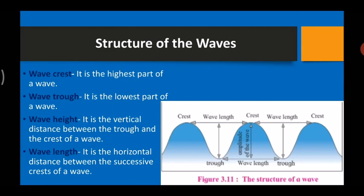Now let's look at the structure of waves. The sea water gets pushed up and down by the wind. The raised-up portion of a wave is called a crest — it is the highest part of a wave. The depressed portion is called a trough — it is the lowest part of a wave. Wave height is the vertical distance between the trough and the crest. Wavelength is the horizontal distance between successive crests.